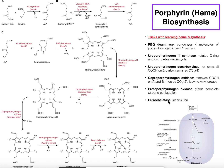The enzyme porphobilinogen deaminase is going to condense four molecules of porphobilinogen, as shown over here, which gives us hydroxymethyl bilane. In this condensation, we lose four ammonias — these come from the amine on the arm extending off of porphobilinogen — and those four porphobilinogens are condensed into hydroxymethyl bilane.